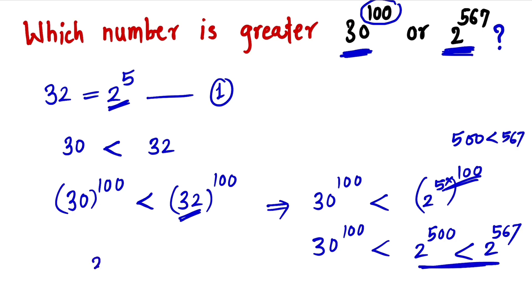That means 30 raise to 100 is less than 2 raise to 567. So this number 2 raise to 567 is greater than the number 30 raise to 100.